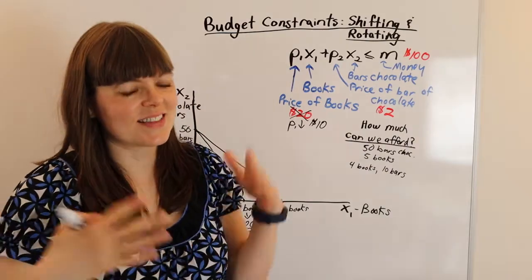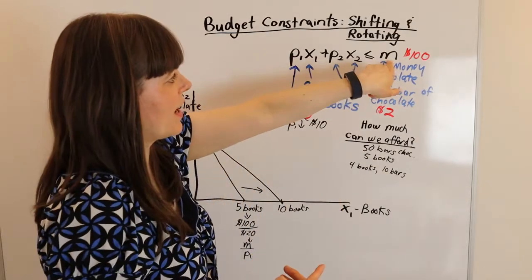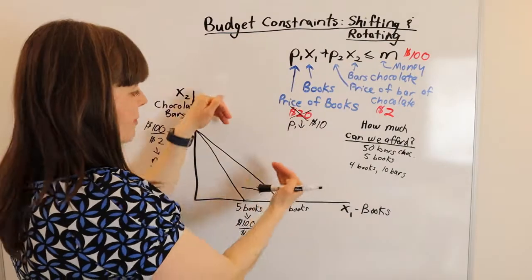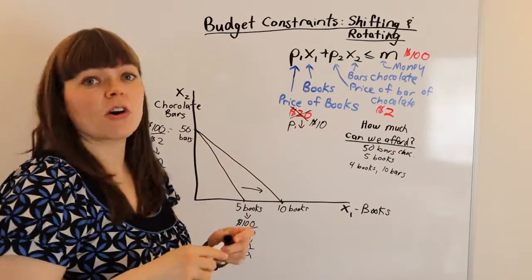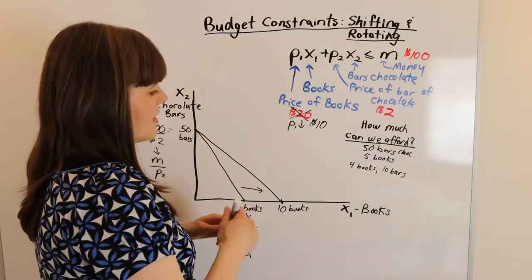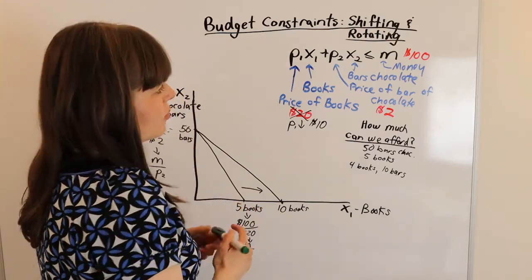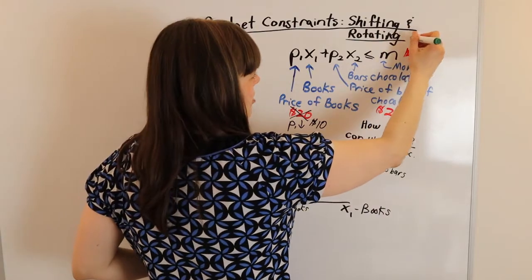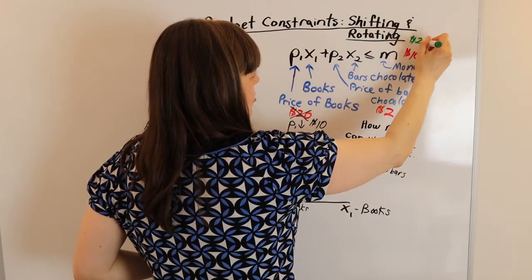And that probably hints that the other option, when we increase or decrease M, that's probably going to shift our budget constraint. But we can also think about that by just hypothetically saying, okay, let's say we increased the amount of money we have to $200. We increased M.